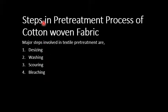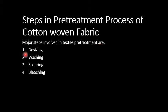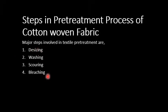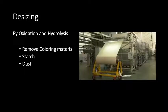Steps in pre-treatment process of cotton woven fabric — major steps involving textile pre-treatment are: पहले desizing, फिर washing, फिर scouring, उसके बाद bleaching। हम इन सबको बारी-बारी discuss करेंगे।